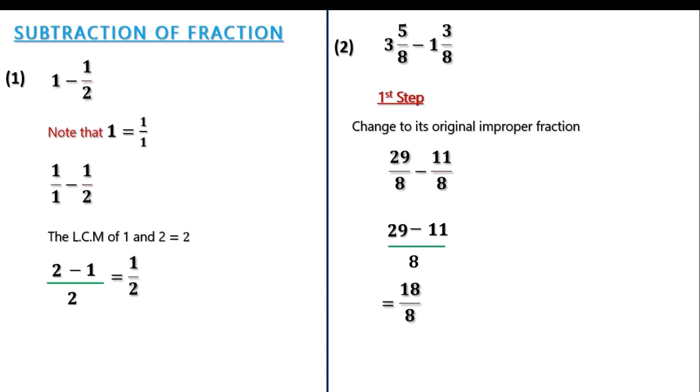Also, we might decide to break this answer further down by taking 2 out, dividing both the numerator and the denominator by a common factor of 2 will give us 9 over 4, because 18 divided by 2 gives us 9, then 8 divided by 2 will give us 4. So we have it as 9 over 4. And if you check this fraction properly, 9 over 4, you will notice that it's an improper fraction.